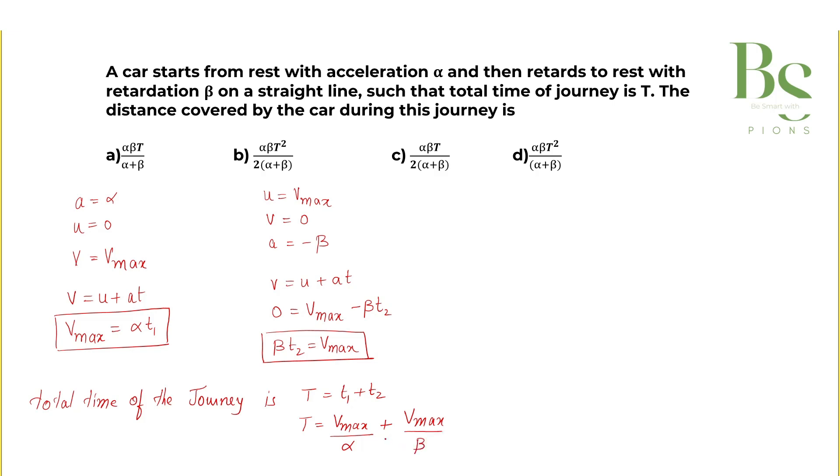So we can say the time T will be equals to taking V_max common, 1 by alpha plus 1 by beta, and cross multiplying it will be V_max times beta plus alpha upon alpha beta. That is our relation between T and V_max. This is our equation.